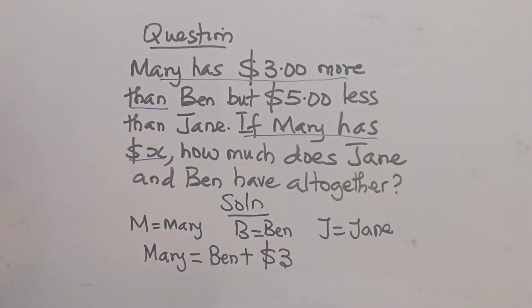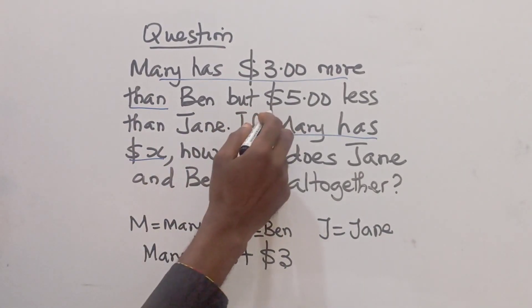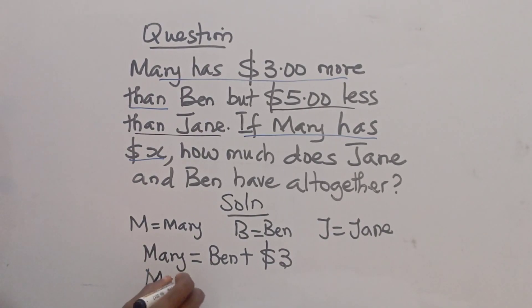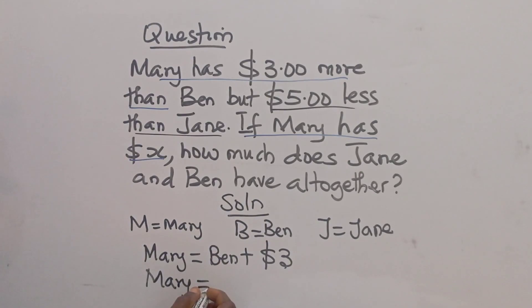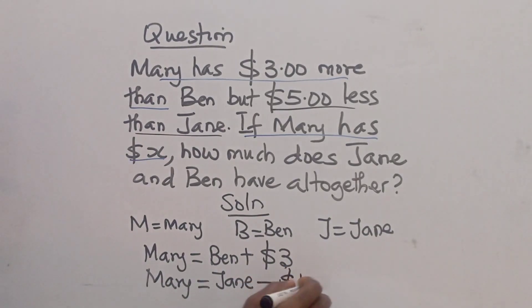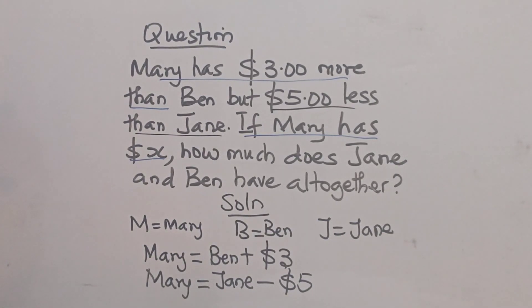But Mary has five dollars less than Jim. For this other statement, five dollars less than Jim — we can say Mary equals five dollars less than Jim, which means Mary equals Jim minus five dollars. So we've been able to interpret both statements.